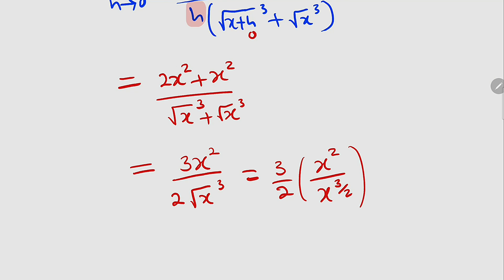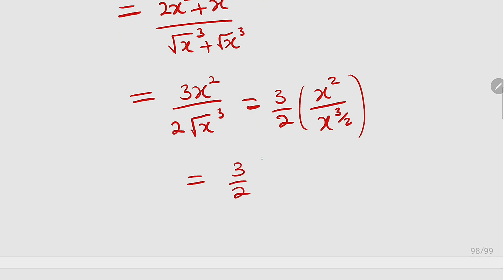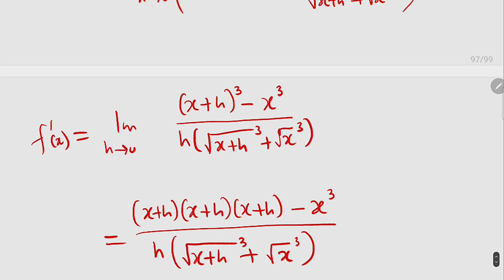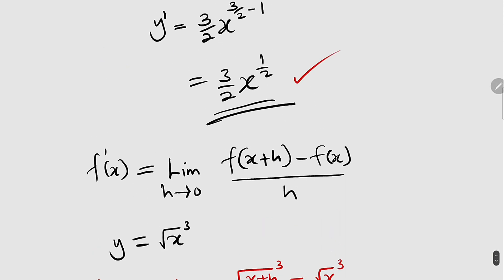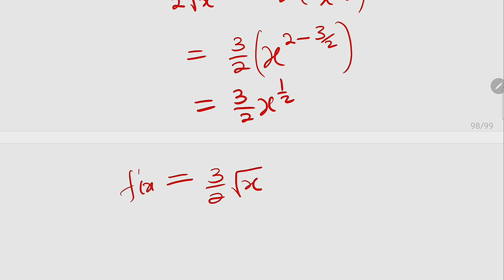Remember this from the initial stage. We can apply one of the laws of indices here because the bases are the same, so we can take one base and subtract the powers. This is equal to 3 over 2 multiplied by x to the power of 2 minus 3 over 2. And 2 minus 3 over 2 is the same thing as 1 over 2. Finally, we have 3 over 2, x to the power of 1 over 2, which is exactly the same thing as what we had earlier. You can further simplify this since x to the power of 1 over 2 is the same thing as square root of x, so we can write it as 3 over 2 multiplied by square root of x, which is f prime of x.